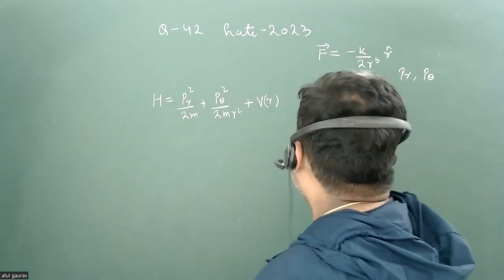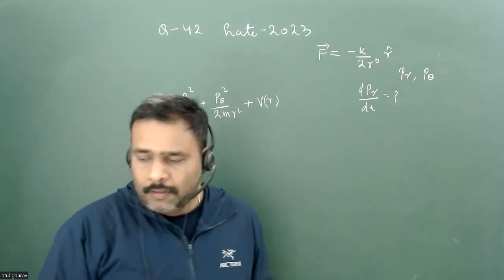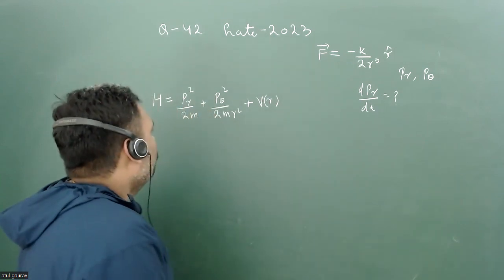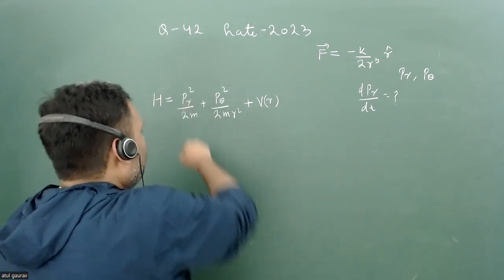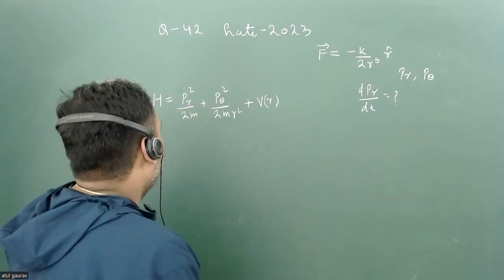The potential is only a function of r because force is given only in the direction of r. Here, pr is the generalized momentum conjugate to r, and p_theta is the generalized momentum conjugate to theta.